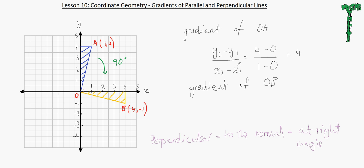So again, we use y2 minus y1. So y2 here would be minus 1 minus 0 over 4 minus 0. So the gradient of line OB, which is the side of this triangle, is negative 1 quarter. Now what do we notice here? This is positive 4 and this is negative 1 over 4.